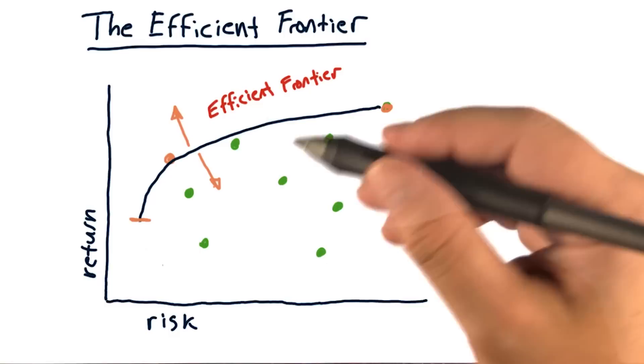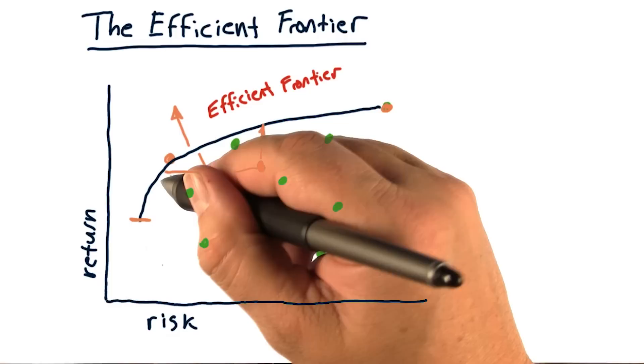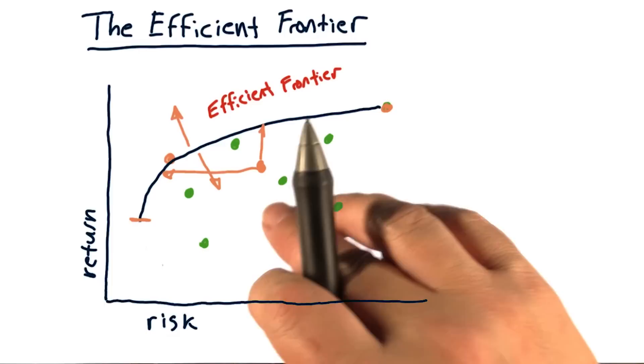For instance, if you had a portfolio here, you're assuming this much risk for a lower return than you could have if you were up here on the frontier. Or if you were targeting this much return, you could be over here with regard to risk. Any portfolio inside here is not efficient because it's either higher risk or lower return than it could be